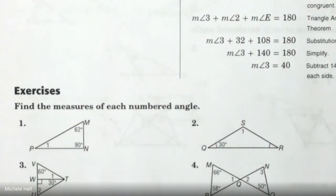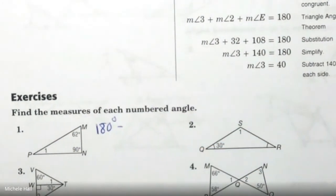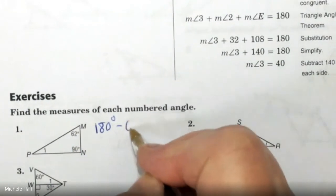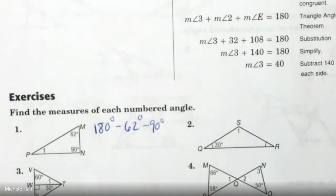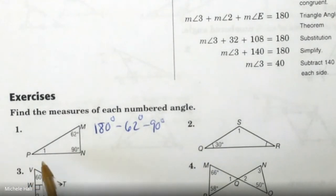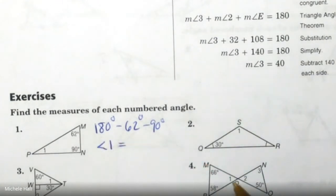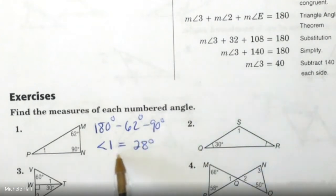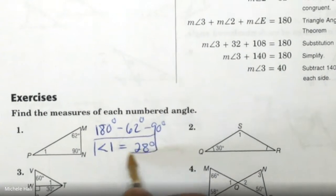Who wants to tell me about number 1? If all of the angles of the triangle are 180, all I need to do is subtract off the other two and it will tell me the third one. Subtracting 62, subtracting 90. Now they're putting numbers inside the triangle, so you just call it angle 1. Angle 1 equals 28 degrees.